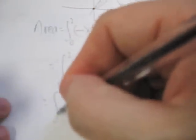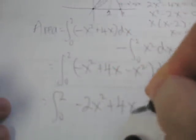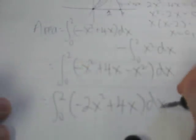Now, we simplify this as the integral from 0 to 2 of negative 2x squared plus 4x with respect to dx.